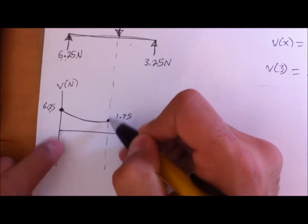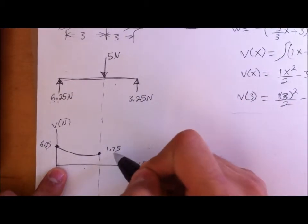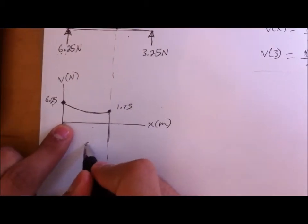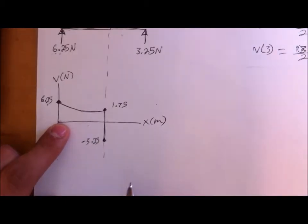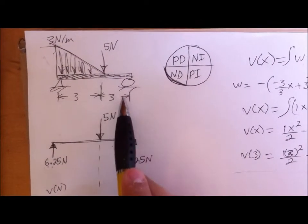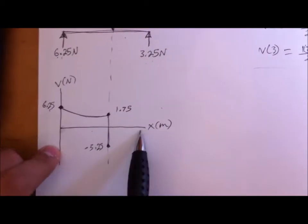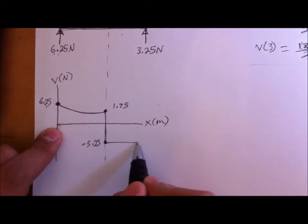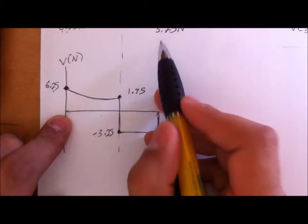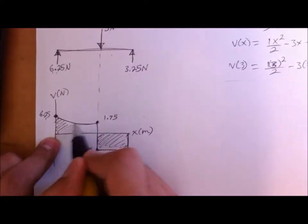At the same distance, we have a force going downward. So 1.75 minus 5 gives us negative 3.25. Then, looking at the diagram, there is no more distributed force. However, we have an actual force going upward which is 3.25. In this case your diagram should end up at 0, and we are actually correct because negative 3.25 plus 3.25 adds up to 0. So this is our shear diagram.